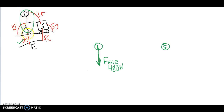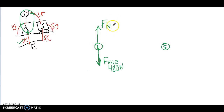Let's look at who the lady is interacting with. We've got the lady and the Earth, the lady and the ground, and the lady and the stroller. If she's not moving up and down at all — she's not even moving — we know her forces up and down have to be balanced. So the surface is going to provide a normal force on the lady from the ground, and that also has to be 480 newtons so it's balanced. Make sure the arrow sizes look right.